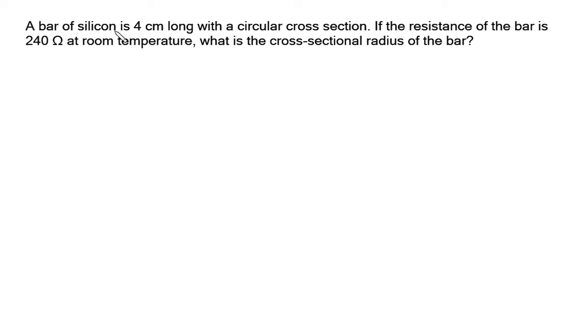A bar of silicon is 4 cm long with a circular cross section. If the resistance of the bar is 240 Ohm at room temperature, what is the cross sectional radius of the bar?